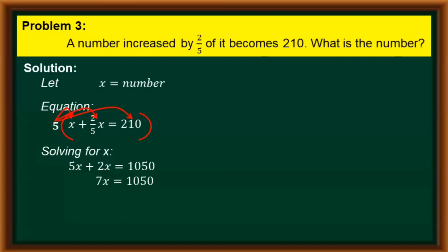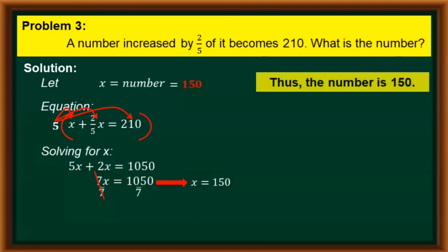Finally, we divide both sides of our equation by 7. The two 7s on the left side cancel out, and 1050 divided by 7 gives us 150. Going back, since we let our number be equal to x, the number we are looking for is 150. Thus, the number is 150.